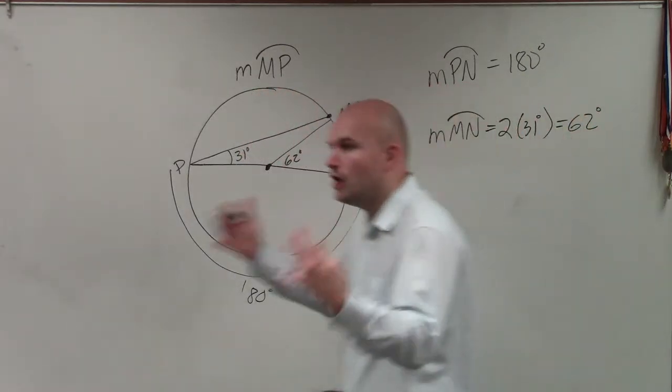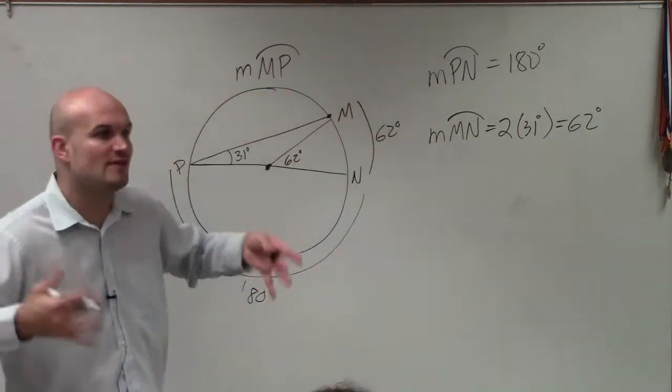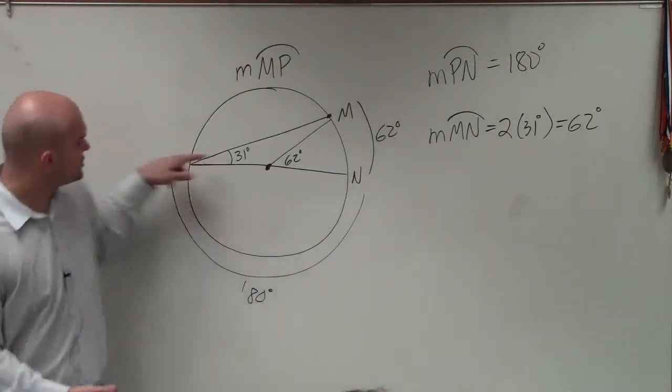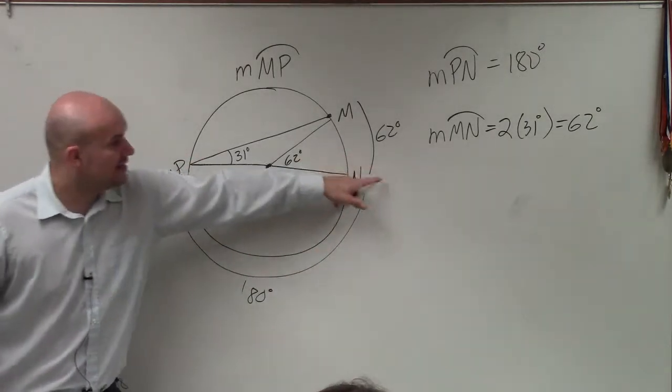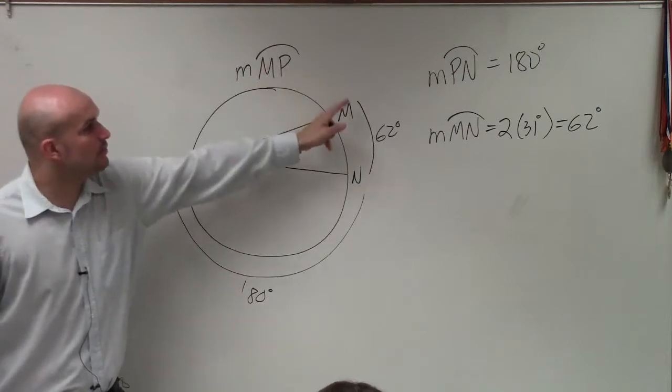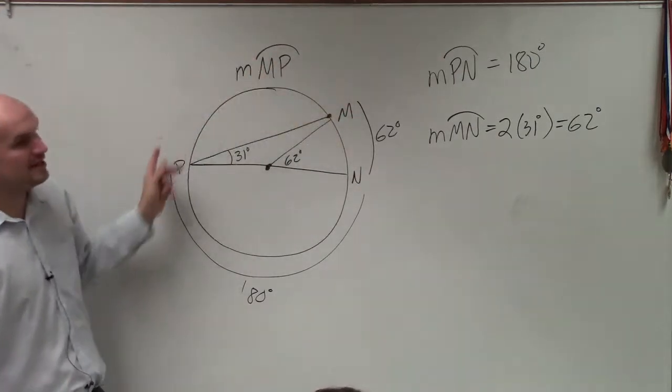Now remember, the sum of all of our arcs is going to add up to 360. So I know from here to here is 180. Here to here is 62 degrees. And the thing I'm trying to figure out is from here to here.